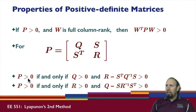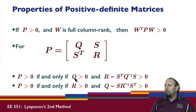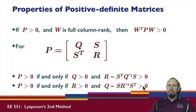If P is partitioned, we have these two equivalent properties. P is positive definite if and only if Q is positive definite and the Schur complement of Q is positive definite, or equivalently, R is positive definite and the Schur complement of R is positive definite.